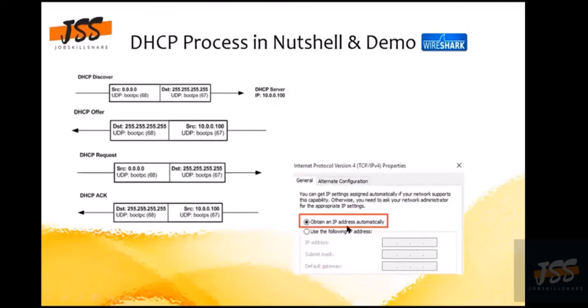To obtain automatically, you have to select that radio button in the TCP/IPv4 settings — that's where the DORA process happens behind the scenes. The concept of DORA is slightly similar to how TCP does its three-way handshake — there's a request, a reply, and a confirmation — but DORA uses different protocols and techniques, and also involves IP address leasing.